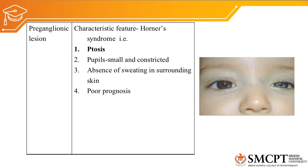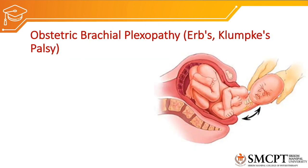Diminished pulse could also be present if vascular structures are involved. The characteristic features of Horner syndrome are ptosis (drooping of the eyelid), small and constricted pupils, and absence of sweating in the surrounding skin. Horner syndrome has a very poor prognosis.